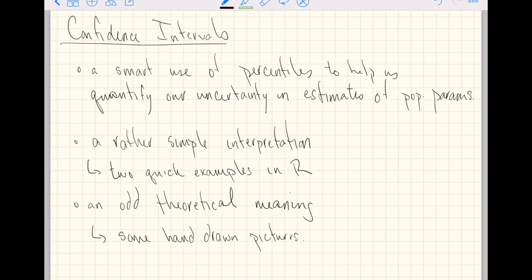It may not be the easiest the first time you see this method, but I think overall this is a really easy way to understand confidence intervals following the bootstrap video we just looked at. We are going to continue with that bootstrapping idea and use a smart use of percentiles to help us quantify our uncertainty in estimates of population parameters — providing a range of values with which we are somewhat confident that the true population parameter lives in.